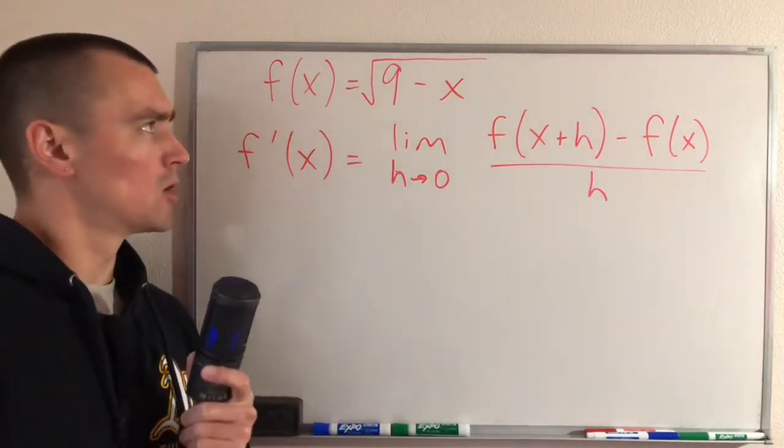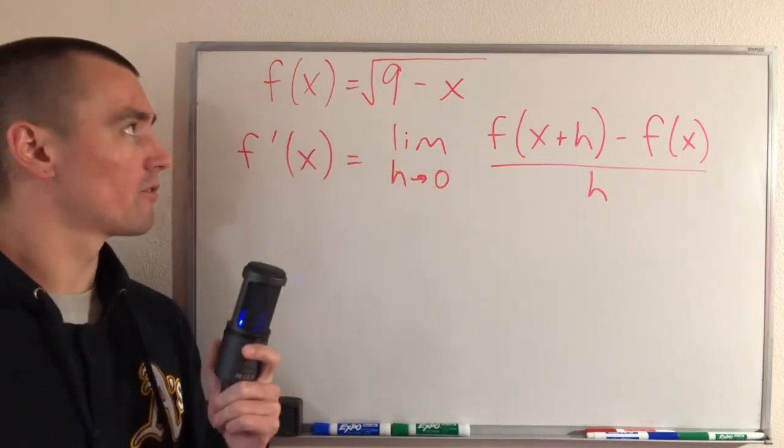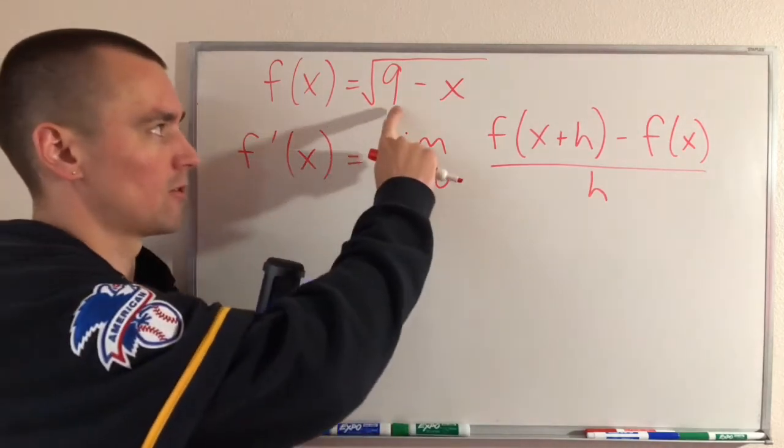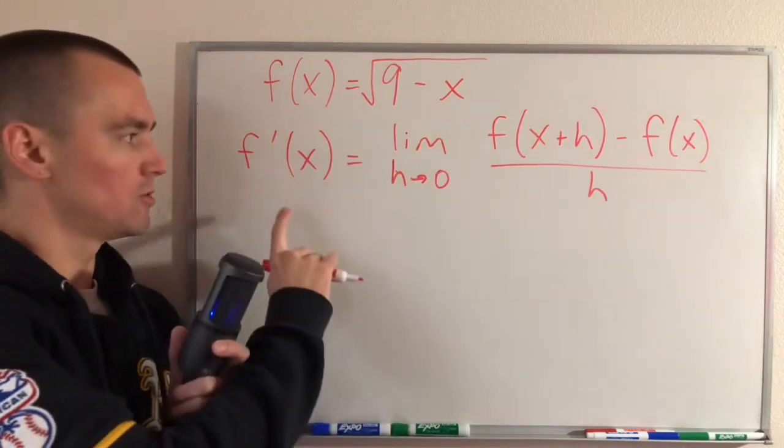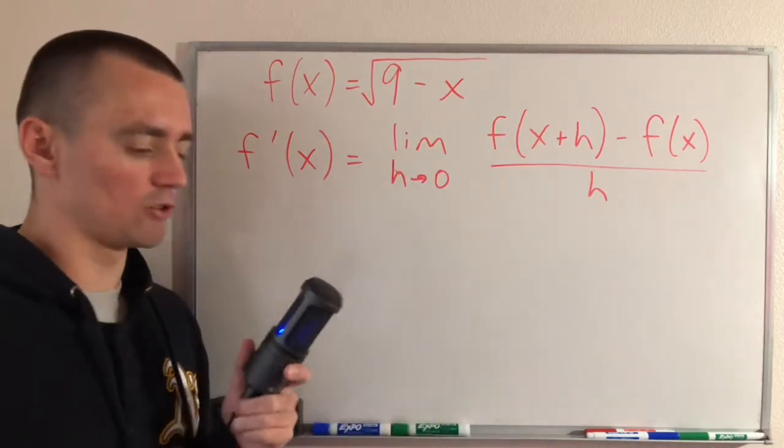Here's the problem we're going to be doing today. We're going to be finding the derivative of the function f(x) equals the square root of 9 minus x, and we're going to be doing it using the limit definition of what a derivative is.